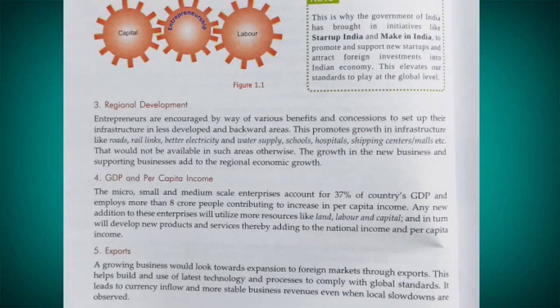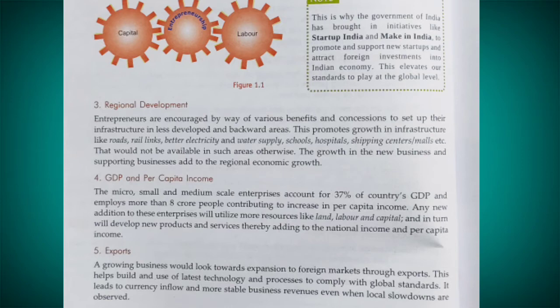The third point is regional development. Entrepreneurs are encouraged through various benefits to set up their infrastructure in less developed and backward areas. An entrepreneur develops the surrounding area, promoting growth in infrastructure — for example, roads, rail lines, better electricity and water supply, schools, hospitals, shopping centers, and malls. If I open a steel industry or a hospital in a backward area, I will need good roads, electricity, and railway connectivity. Entrepreneurship creates this infrastructure.